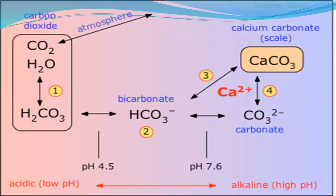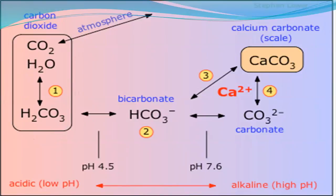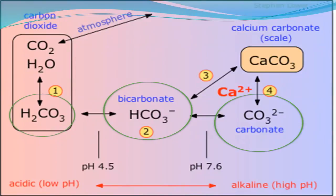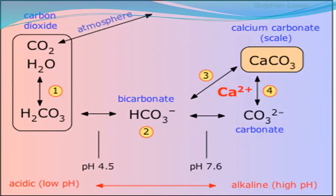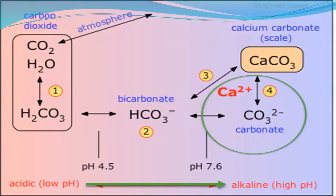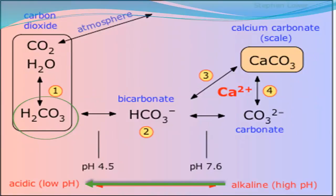Hardness is closely related to alkalinity, so it is important to understand both of these water parameters and how they work for and against each other. The image here depicts the carbonic acid/bicarbonate buffering system in natural waters. Water vapor in the atmosphere is naturally acidic due to saturation with carbon dioxide. When carbon dioxide gas is dissolved in water, it forms carbonic acid (H2CO3), which is a weak acid. Carbonic acid, bicarbonate, and carbonate are all interrelated, and depending on the pH of the water source, different forms of these species are present in solution. Under basic conditions, more carbonate is present, and under acidic conditions, more carbonic acid is present.